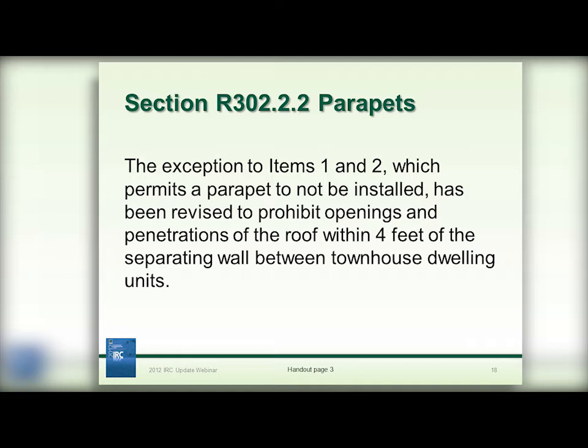In section R501.3, there is a new section that requires fire protection of floors. Installation of half-inch gypsum board, five-eighths-inch wood structural panel, or other approved material is now required on the underside of floor assemblies of dwelling units and accessory buildings constructed under the IRC. This change addresses concern for firefighter safety and incidents of injury or death to firefighters while fighting residential fires due to the collapse of floors. The application of gypsum wallboard or other approved material is intended to provide some protection to the floor system against the effects of fire and delay the collapse of the floor.